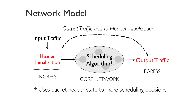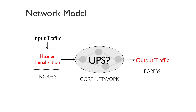However, in a quest for universality, we envision tying the output traffic characteristics solely to the header initialization process, with the core running a scheduling algorithm that is completely agnostic of the desired output — it simply makes uniform scheduling decisions using the packet header state. You can think of this header initialization as analogous to passing different parameter values to a fixed function to get different desired outputs. The question we ask is: is it possible to have a UPS here that relies only on header initialization to get any desired output?